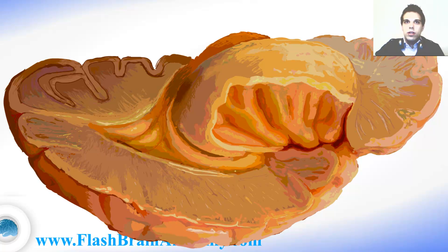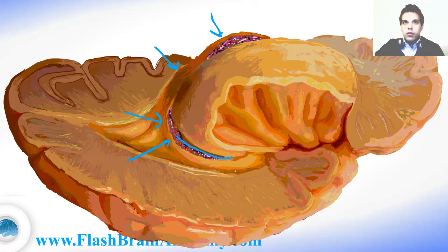The lateral wall is again created by the tapetum, the same as the dorsolateral wall of the posterior horn. I also illustrated the choroid plexus, which is made of modified ependymal cells and creates the cerebrospinal fluid. It goes all the way from the inferior horn of the lateral ventricle over the cella media and to the anterior horn of the lateral ventricle, and there it passes through the interventricular foramen of Monro into the third ventricle.